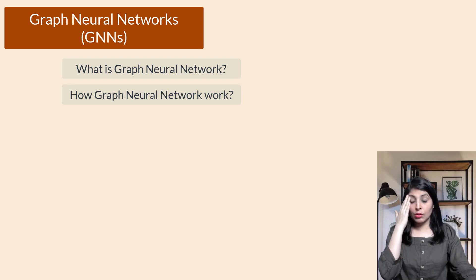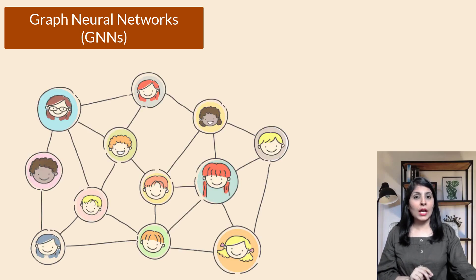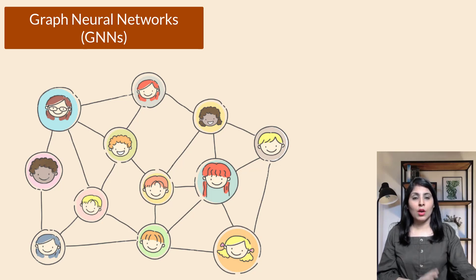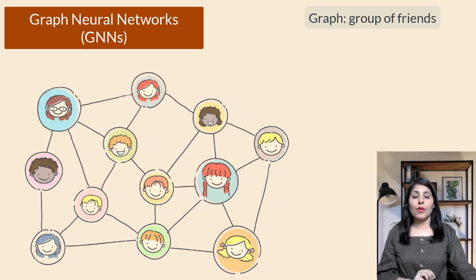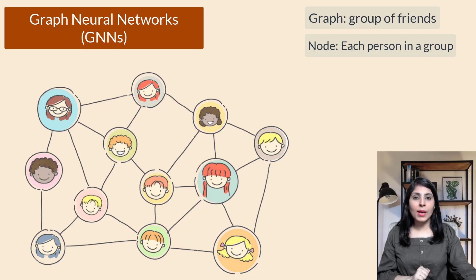Now let's understand what a graph neural network is and how it works. Imagine you have a group of friends, each with a different number of other friends in the group. We can represent this group as a graph, where each person is a point called a node, and the connections between them are represented by lines called edges.